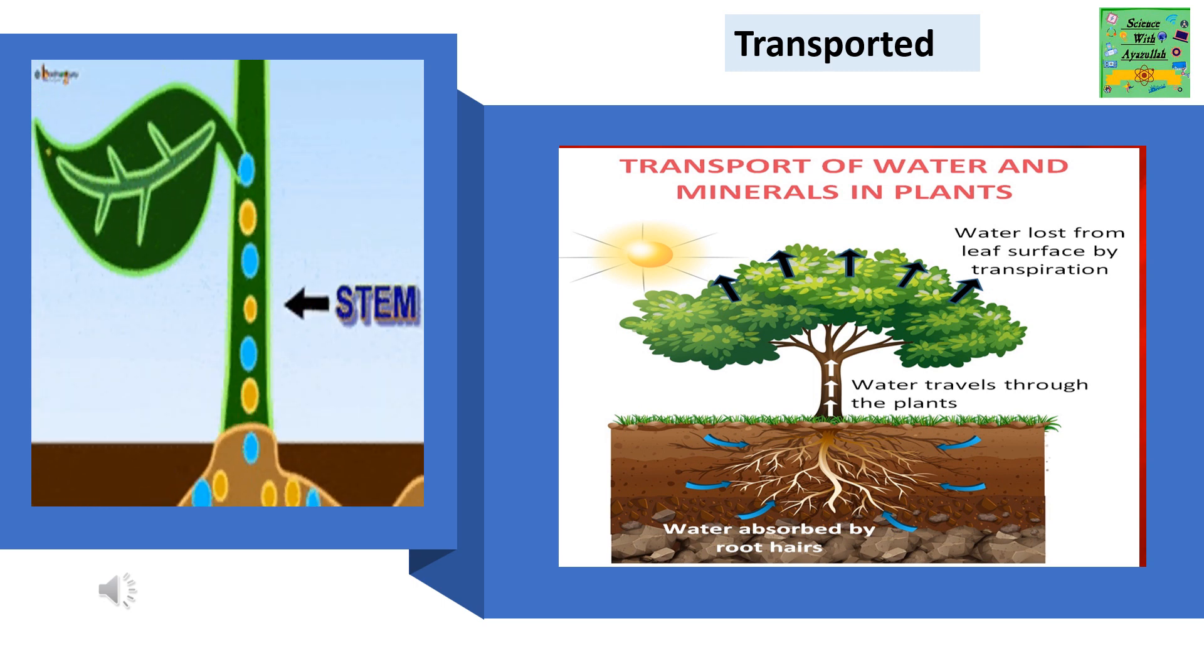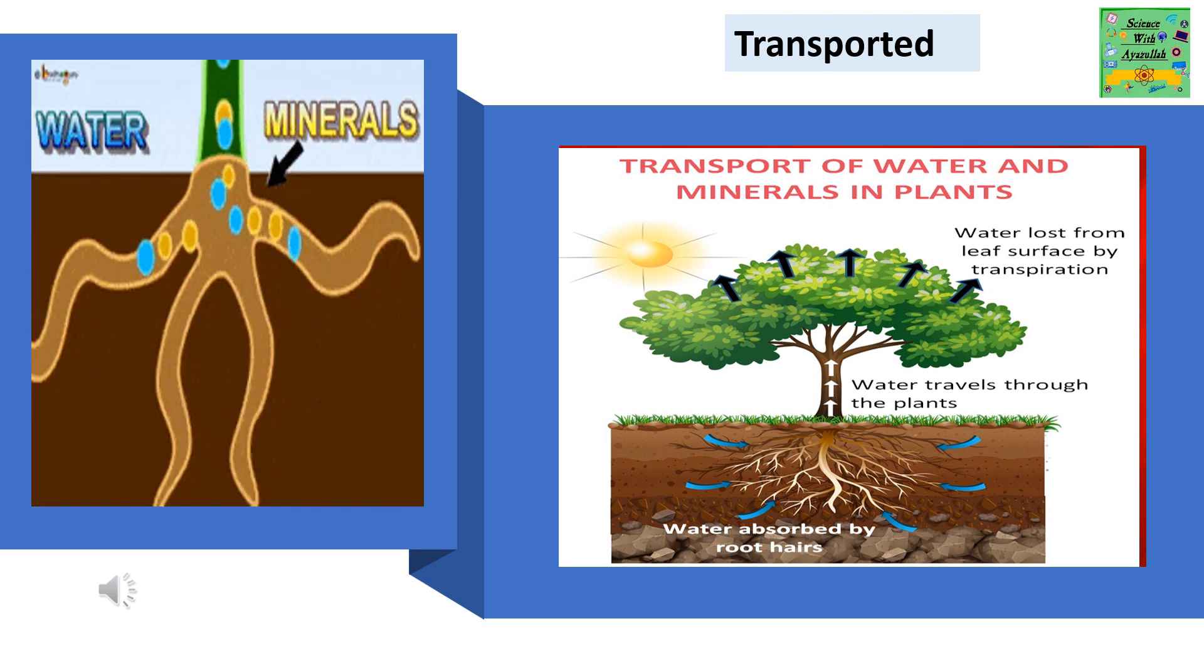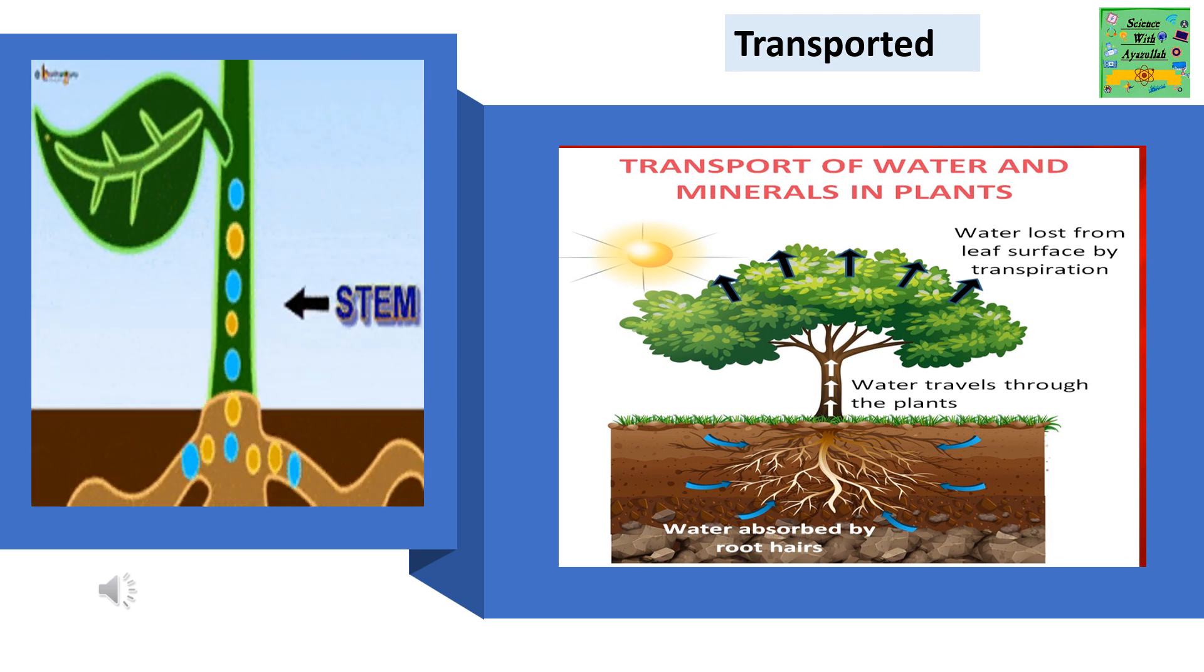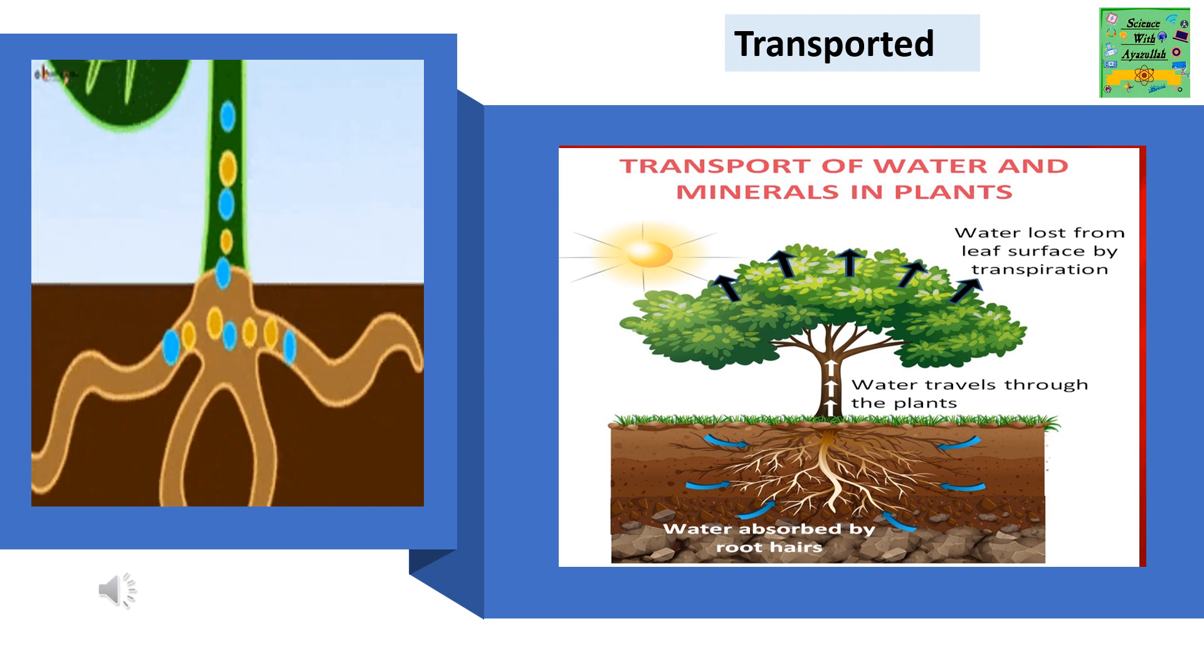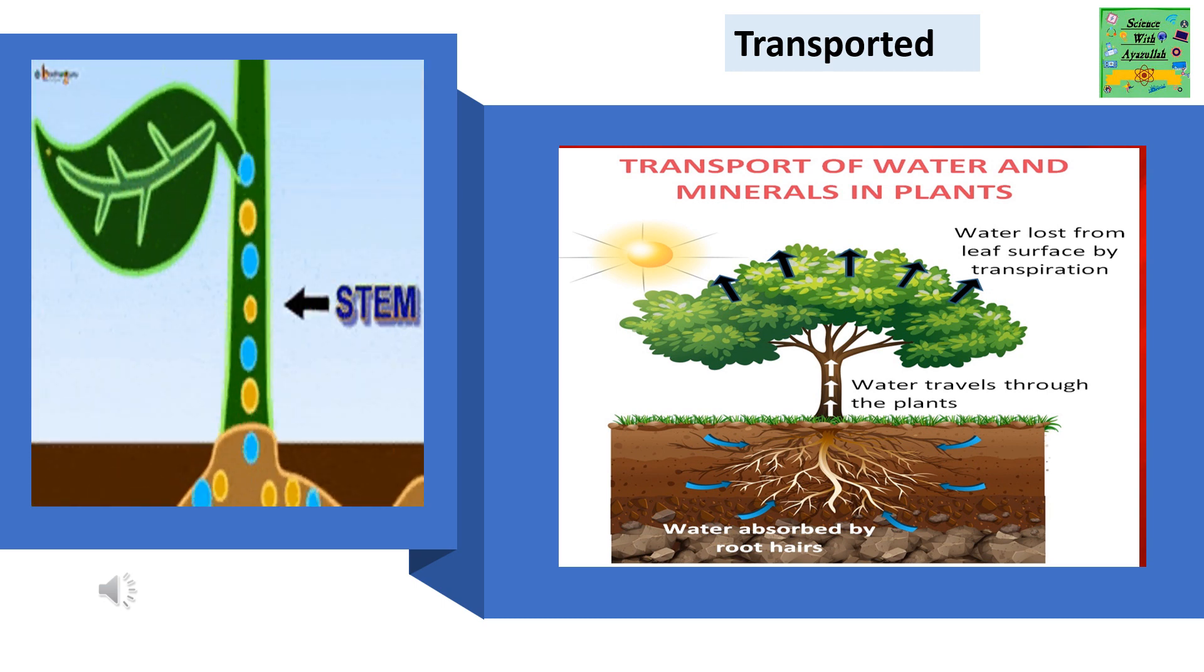Transport of water and minerals in plants. Water absorbed by root hairs. Water travels through the plant. Water lost from leaf surface by transpiration.